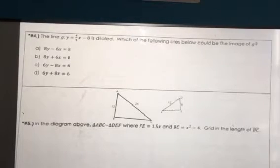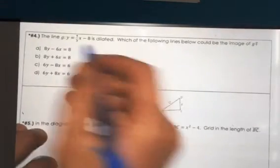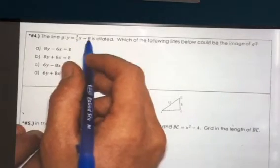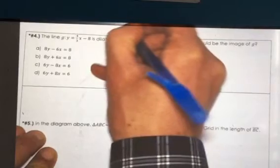Okay, this question must be easy money. It is meant there to be there for us all to get it right. The line G, y equals four thirds x minus eight, is dilated. So when we dilate a line, slope stays the same.